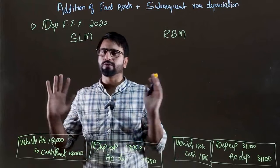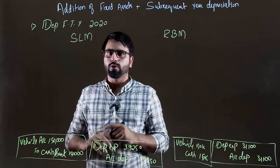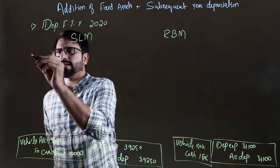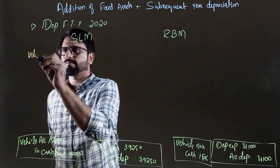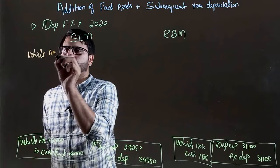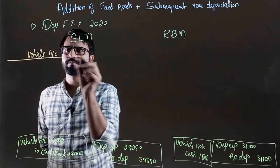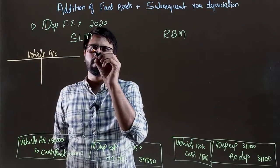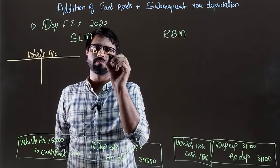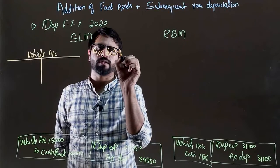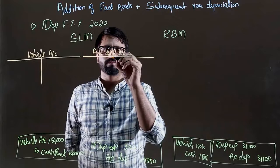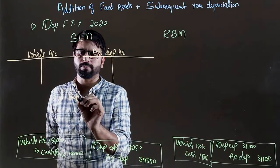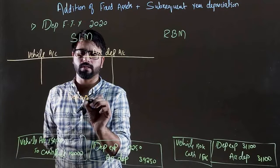We bought assets. Cost method is made — three ledgers are made. If you haven't been told which method is used, then we have to make three ledgers. We will make one ledger: Vehicle Account. The second ledger is the Accumulated Depreciation Account. And the third ledger is the Depreciation Expense Account.